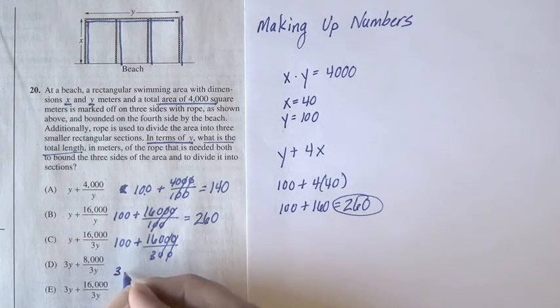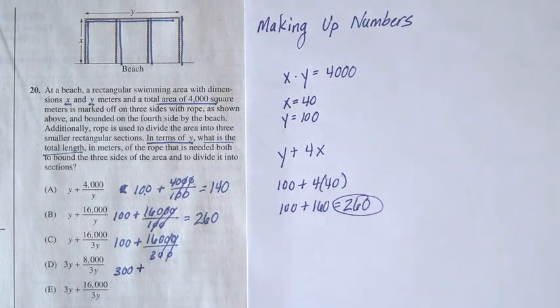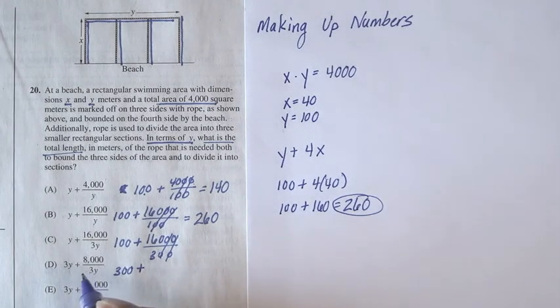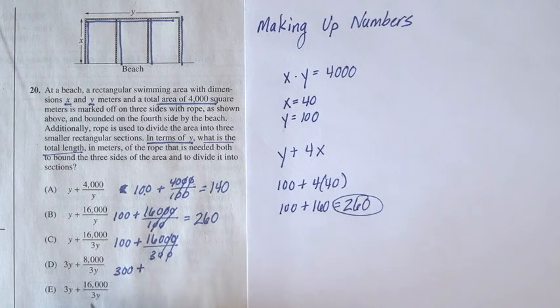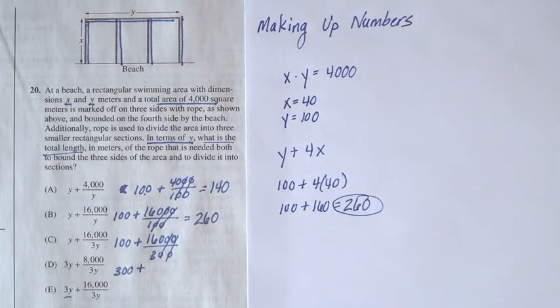D we have 3y, so that's 300 plus, well, that's already bigger than 260, so D is out. And then E, again, we have this 3y out front, so 300, that's already bigger than 260, and it's out.